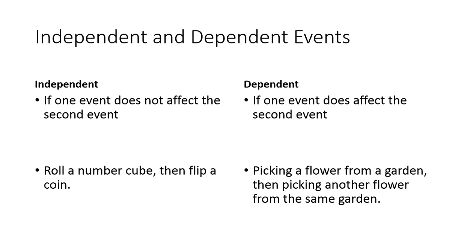Moving on from basic probability, we need to talk about the difference between an independent and a dependent event. Independent events are events that do not affect each other. For example, if you roll a die and flip a coin, or if you roll two separate dice — those don't have an effect on each other, so those would be independent events.